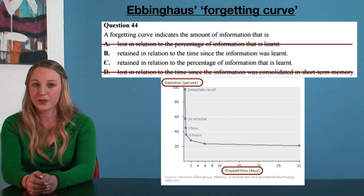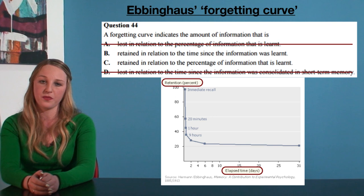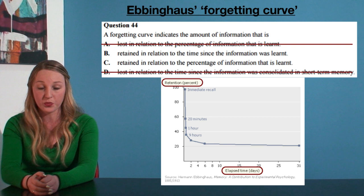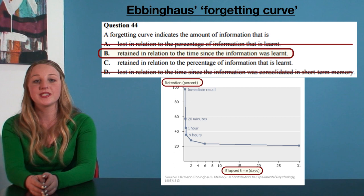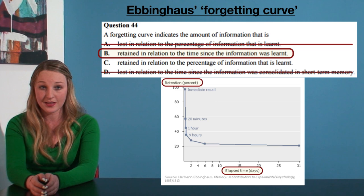That leaves options B and C. What's the difference between the two? Option B says that the forgetting curve indicates the amount of information retained in relation to the time since the information was learnt. Option C says that the forgetting curve indicates the amount of information retained in relation to the percentage of total information that was learnt. If you have been paying attention, you will hopefully recognise that the correct response is option B. Remember, the y-axis shows the retention of information measured by the percentage of total information learnt, and this is in relation to the x-axis — the time that has elapsed. We're not really concerned with how much information is retained when more or less information is learnt, because Ebbinghaus suggests that the rate of forgetting is the same.